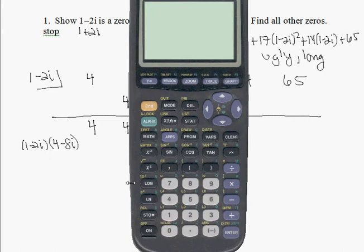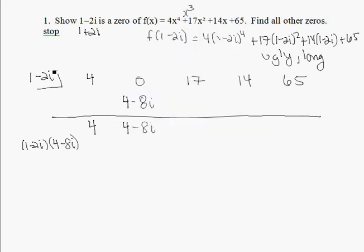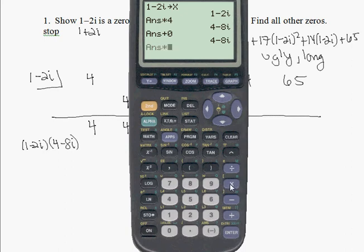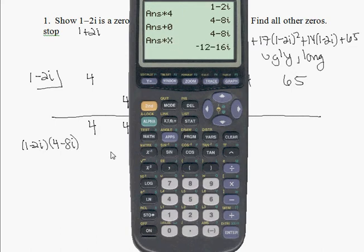So we're dividing by 1 minus 2i. I'm going to do 1 minus 2, where the second decimal point is the i. I'm going to store that as a variable. So now my divisor, 1 minus 2i, is now stored as x. So we did 4 times that, which is 4 minus 8i. And then we add that to 0, I get 4 minus 8i. Now I need to multiply 4 minus 8i times 1 minus 2i. I can just do times x, because I know x is 1 minus 2i, and it's multiplied by 4 minus 8i. So I get negative 12 minus 16i.